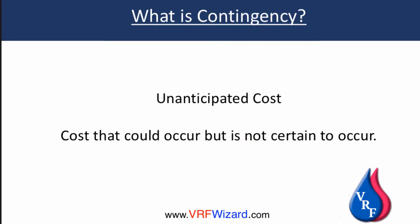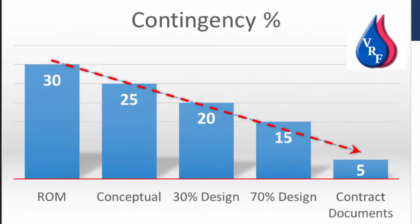So what is a contingency? Basically it's an unanticipated cost — a cost that could occur but is not certain to occur. During the design phase you could have a ROM estimate, which is a rough order of magnitude, so the contingency is going to be high on that. For projects that are in their conceptual stage of development, you can expect to have a higher contingency factor than that of a fully designed contract document set.